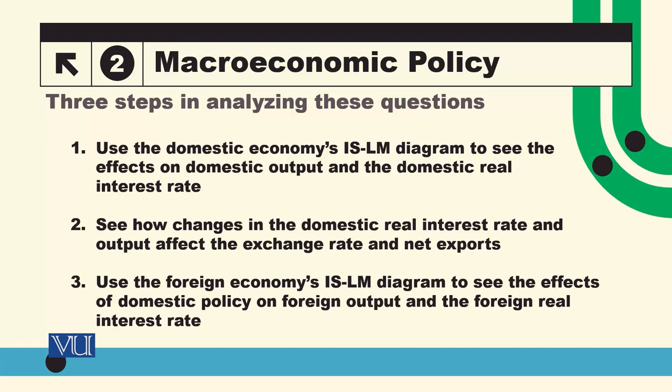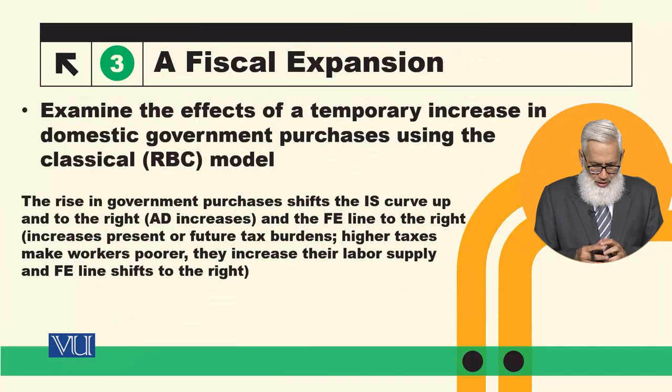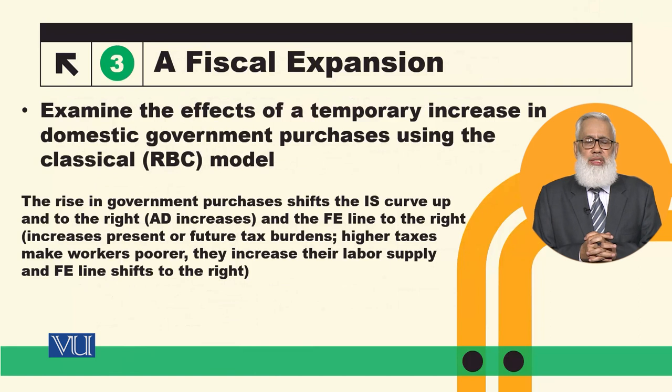The second step is to see how changes in the domestic real interest rate and output affect the exchange rate and net exports. The third step is to use the foreign economy's IS-LM diagram to understand how our trading partners are affected — what is the impact on their net exports, real exchange rate, and overall economies.